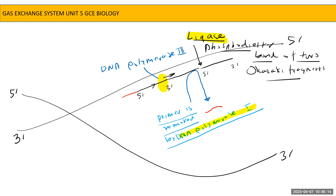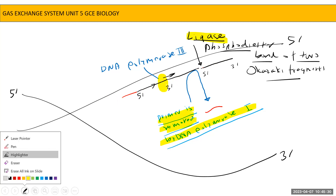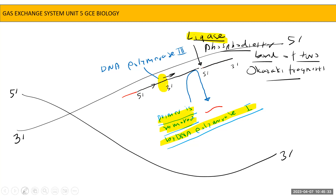Ligase enzyme makes the phosphodiester bond of two Okazaki fragments. This is the function of ligase — it joins two Okazaki fragments with the phosphodiester bond. DNA polymerase 1 can remove the primer and rebuild or synthesize the rest of the strand. Finally, in this way, it makes a continuous strand on the lagging strand.